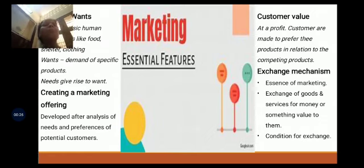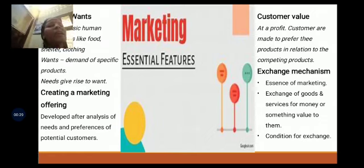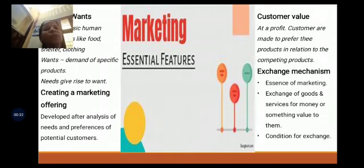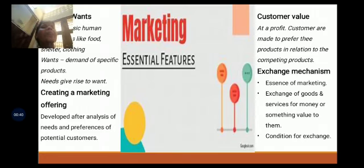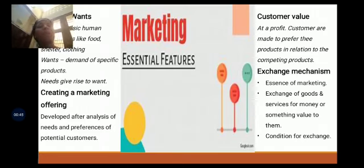What do you mean by a product? A product is defined by its various attributes. The various attributes that denote a product include color, size, shape, features, and the brand. All these things are denoted as a product.